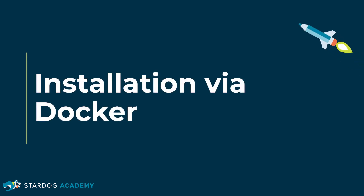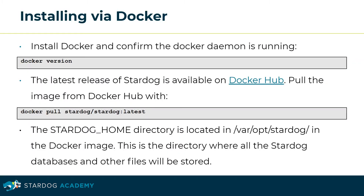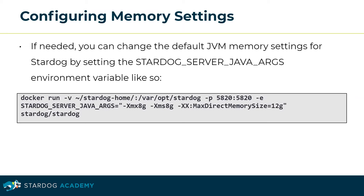This section is about installation via Docker. First install Docker and confirm the Docker daemon is running using docker version. The latest release of Stardog is available on Docker Hub. Pull the image from Docker Hub with: docker pull stardog/stardog:latest. The Stardog home directory is located in /var/opt/stardog in the Docker image — this is the directory where all the Stardog databases and other files will be stored. If needed, you can change the default JVM memory settings for Stardog by setting the STARDOG_SERVER_JAVA_ARGS environment variable. This concludes the section about installation via Docker.